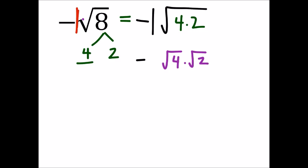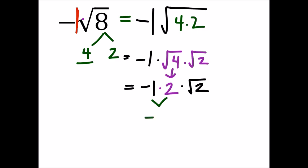Then we have negative one, and the square root of four is two, so we multiply that by the square root of two. Negative one times two is negative two, giving us negative two times the square root of two.